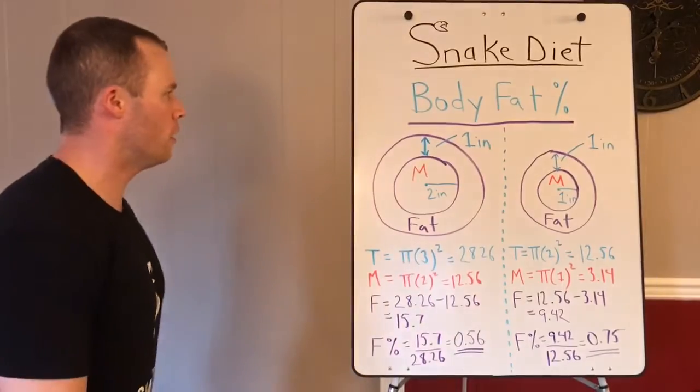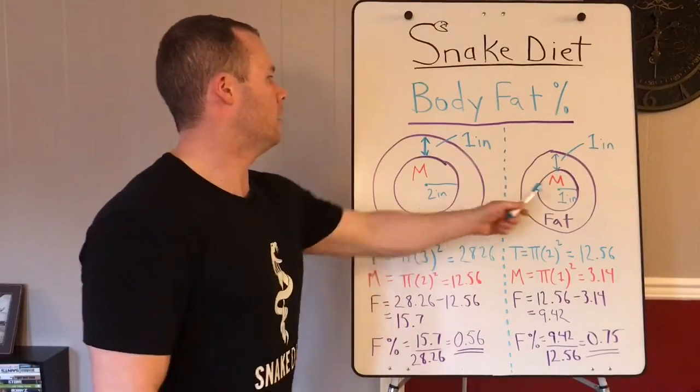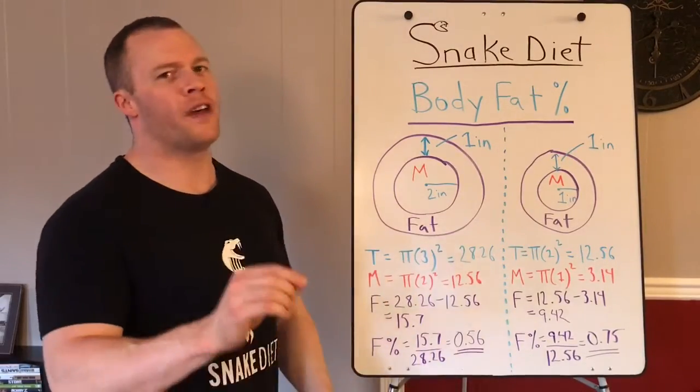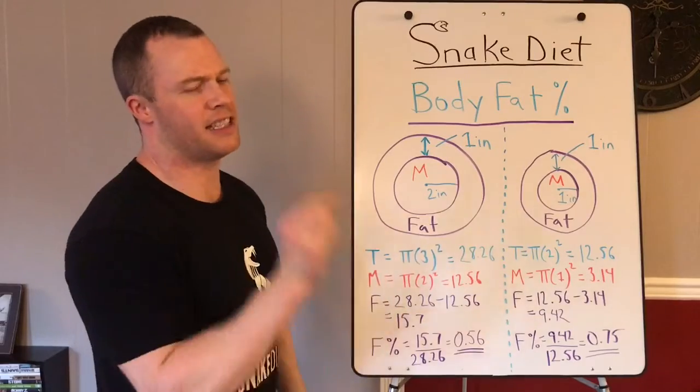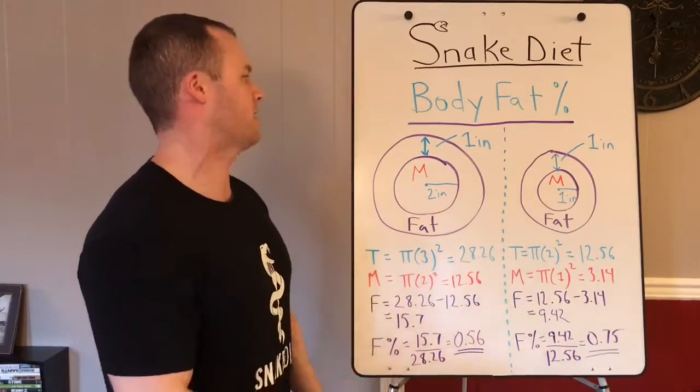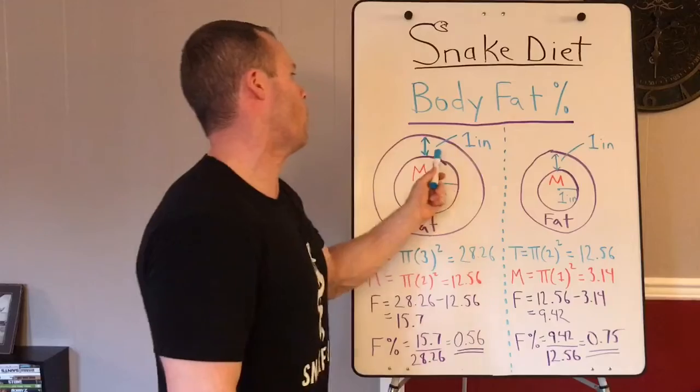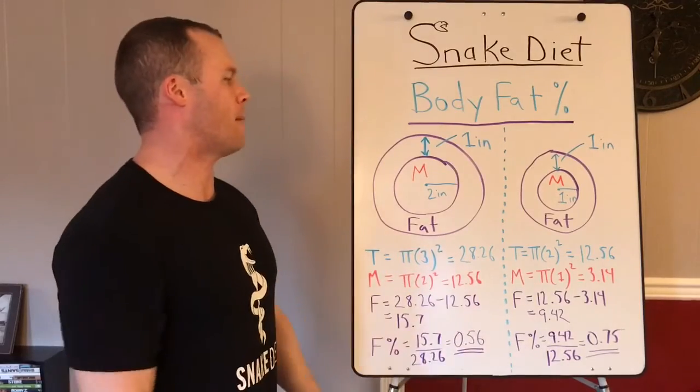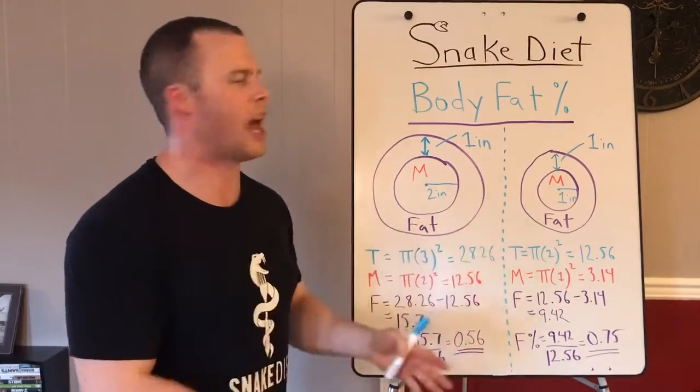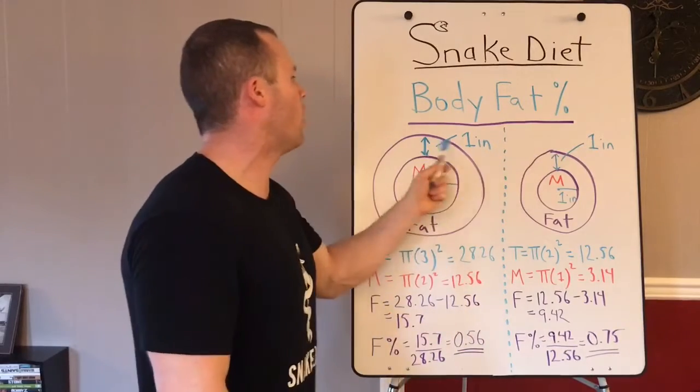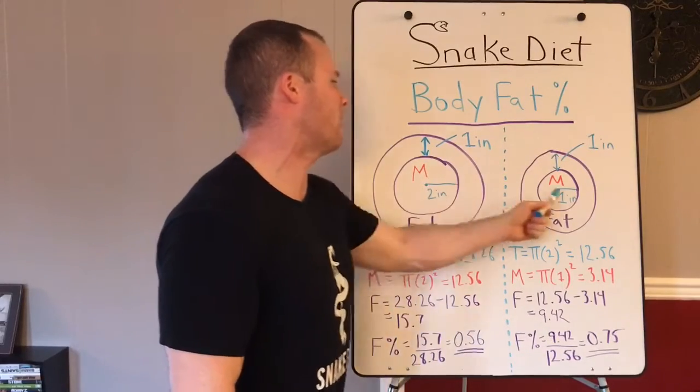So I got two people here. They both have the same thickness of fat on their abs—one inch. Obviously my body fat percentages I'm using are crazy here, it's just for an example. One inch on both guys, but one guy's way bigger than the other guy.